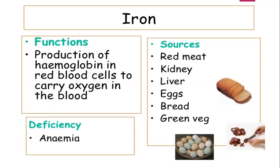Iron helps in carrying oxygen around the body. Shortage of iron results in a disease called anemia. Symptoms include loss of appetite and weight loss. Sources include eggs, kidney, red meat, bread, and green vegetables. Iron functions for the production of hemoglobin in red blood cells and to carry oxygen in the body.